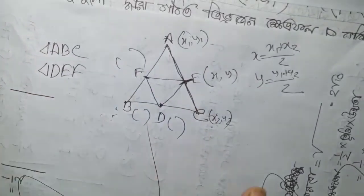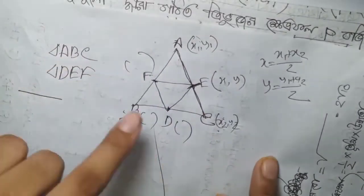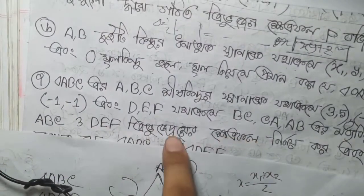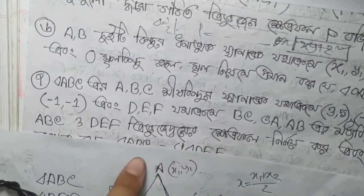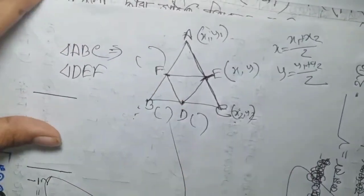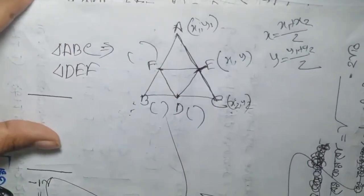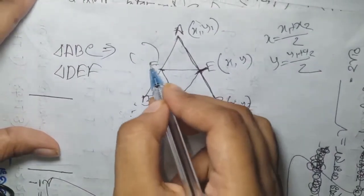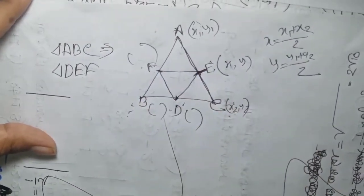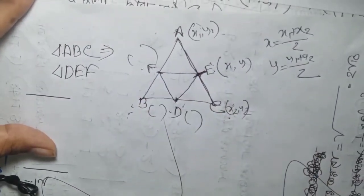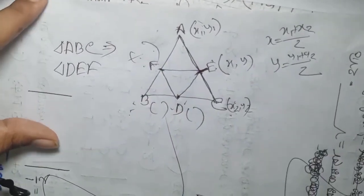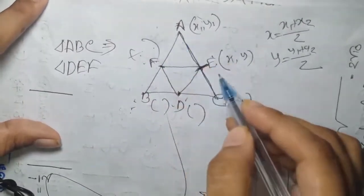That means we are going to take the value of x3. The number of x3 is just waiting to take a look.